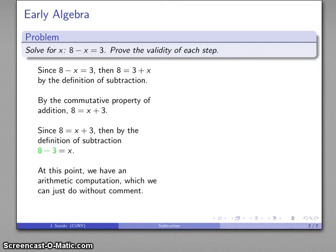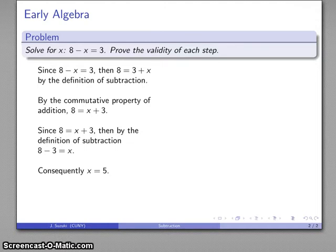And at this point, I have an arithmetic computation I have to do, and assuming that we've learned at least a little bit of these arithmetic operations, if we know how to do the subtraction 8 minus 3, we can perform that subtraction without comment. x is equal to 5. And there's my solution with the validity of each step proven.